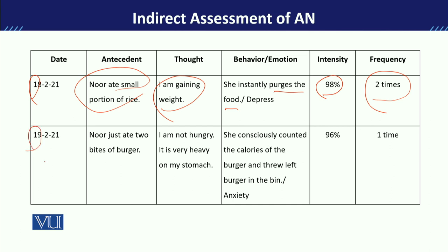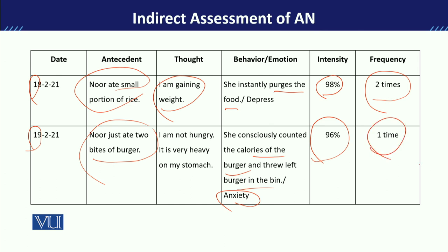Then on the 19th, Noor took only two bites of a burger, and after that she started counting calories — how many calories are in one burger — and then she threw the burger away. The emotion she reported was anxiety, with an intensity of 96%, and she did this only once. During that time, her thought pattern was: 'I am not feeling hungry at all' and 'This is too heavy for me.'